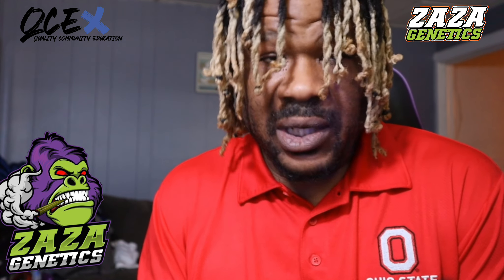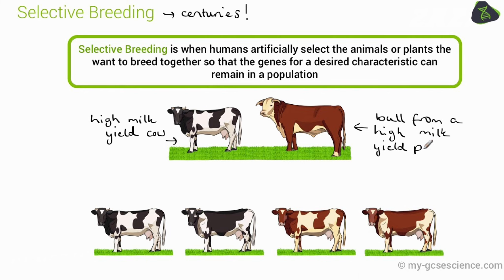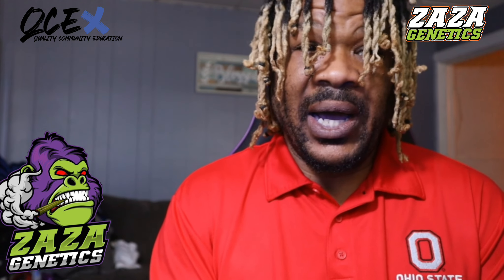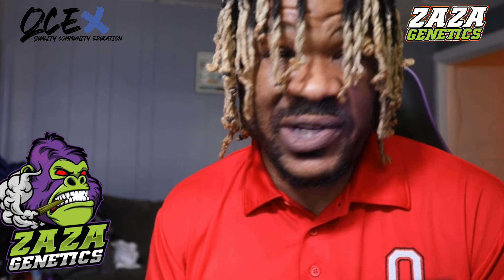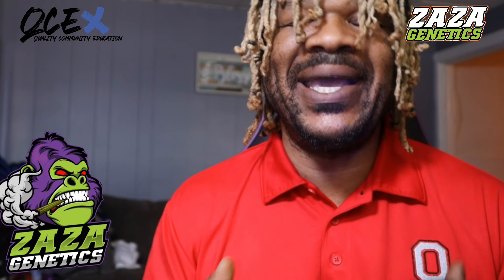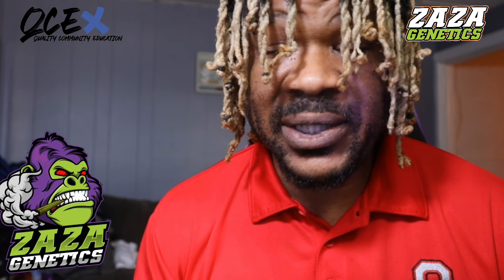Let's take a look at the definition of selective breeding. Selective breeding, also known as artificial selection, is a traditional method used in agriculture and horticulture to develop plants and animals with specific desirable traits. It involves choosing parent plants with favorable characteristics and breeding them together to produce offspring that inherit those same exact traits.